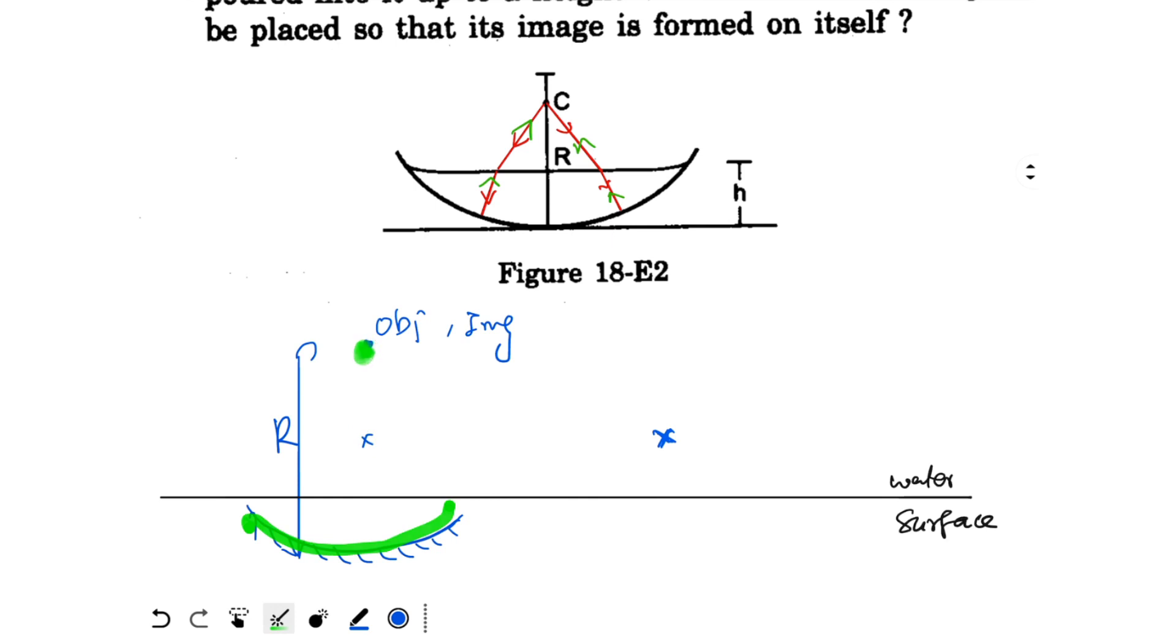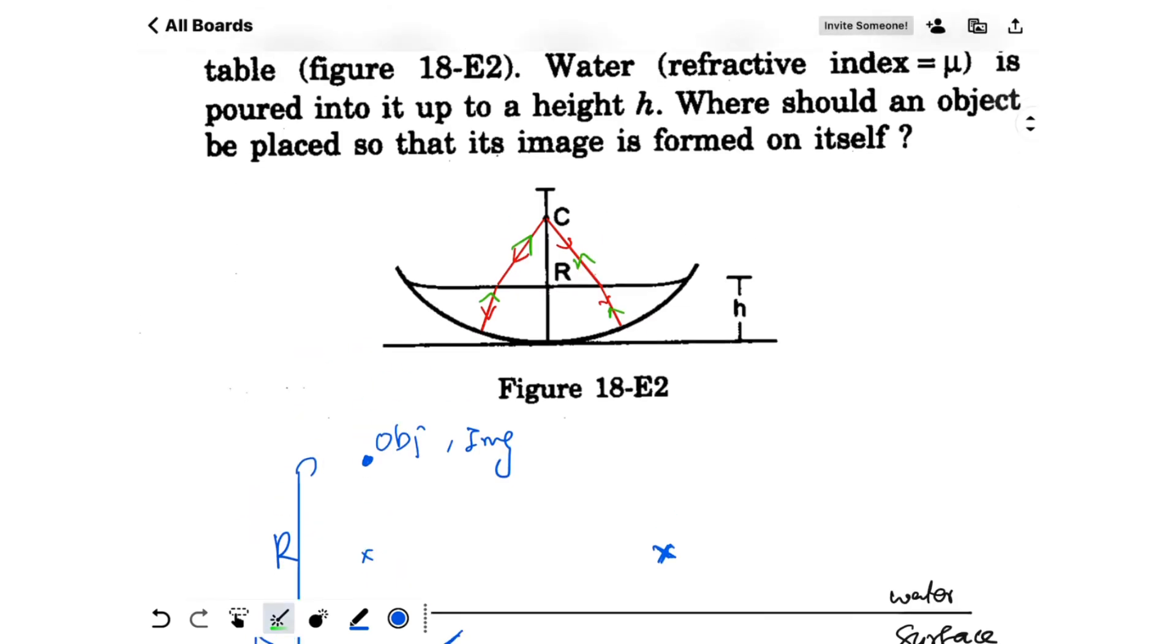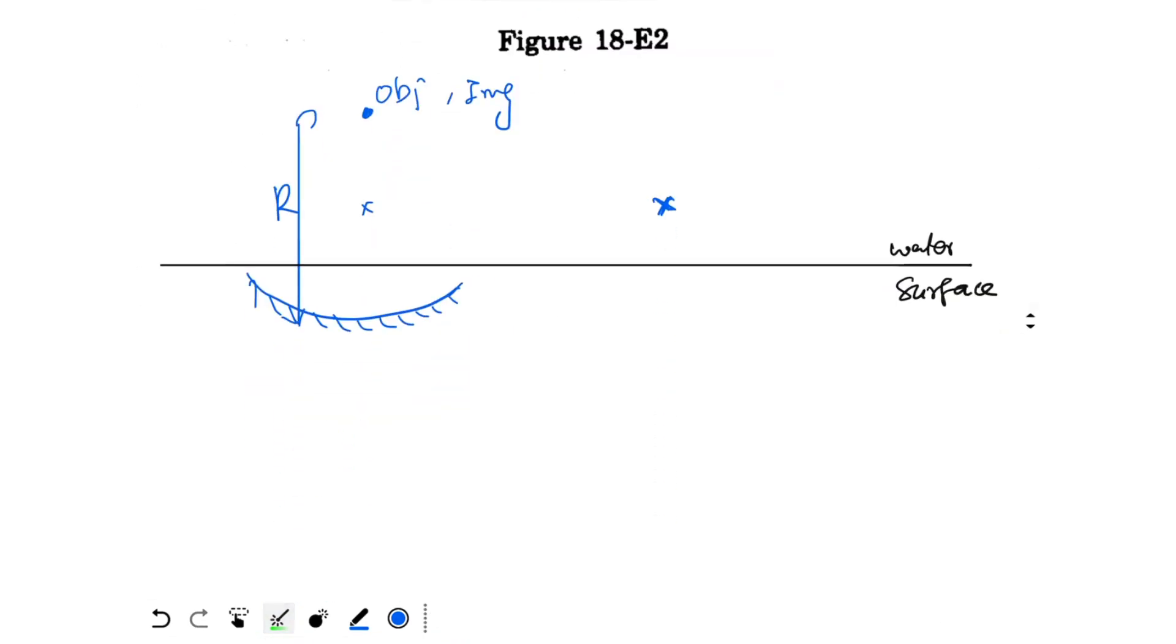This object is forming first image at this point. This image acts as the object for the mirror. So the mirror will form the image at this point, and that image will be again refracted by the water surface and form at the position of the object. Basically, when you see this diagram, the water should refract such that the apparent image is formed at the center of curvature.